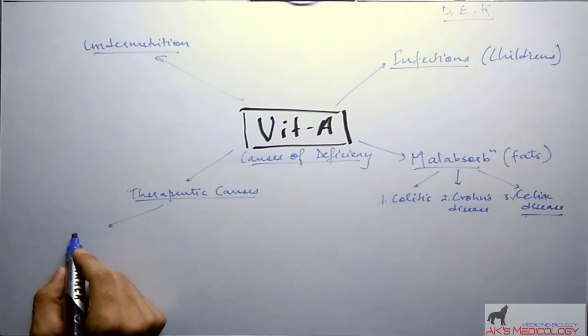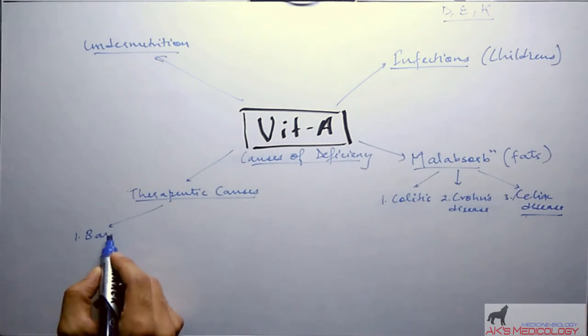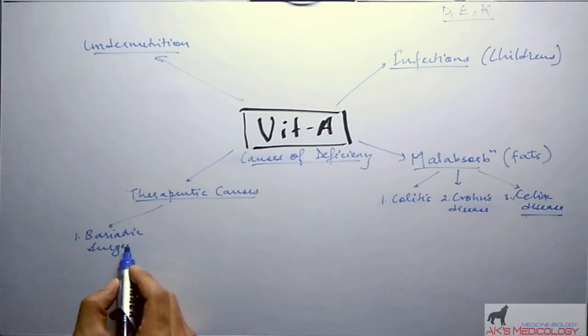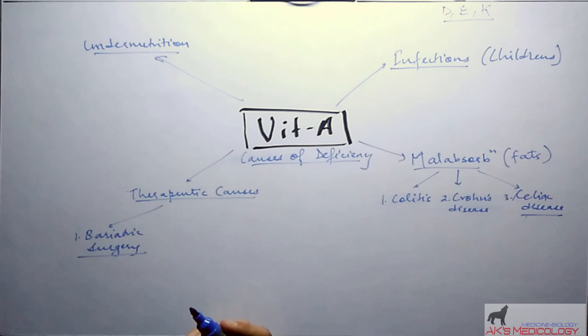One is bariatric surgery. Bariatric surgery is a surgery performed to reduce obesity, performed generally in two ways. One being the resection of stomach or reduction in the size, or by a gastric bypass.